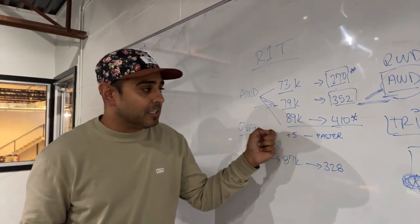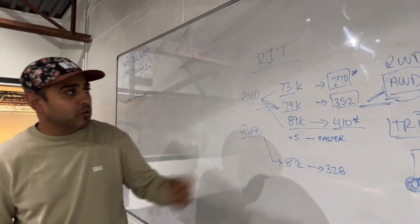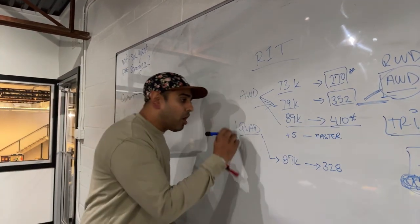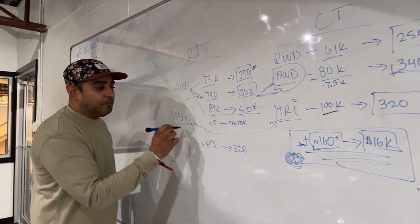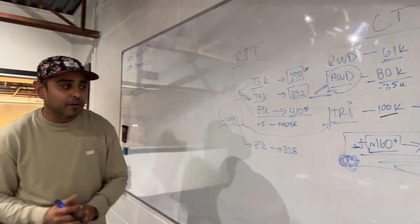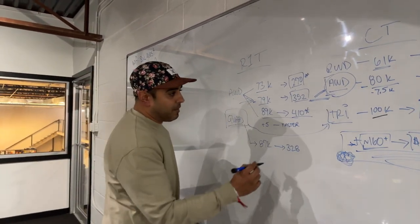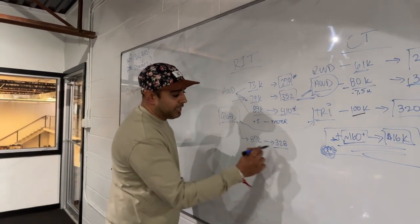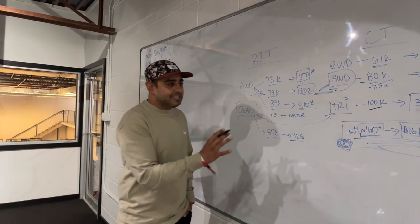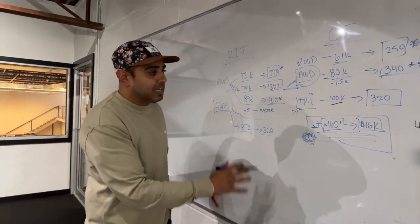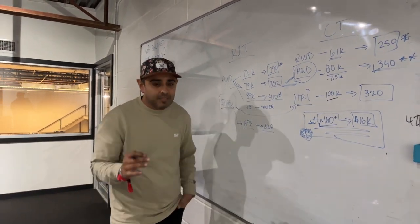Not only that, but R1T has a quad motor option. This is going to be on par with the tri-motor, but you've got quads, so a little bit better for off-roading and so forth. That one, you're going to get a little bit less range, but you're at $87,000. So a lot to take in here. I think Cybertruck definitely edges out because it is just a polarizing, amazing, cool vehicle that's bulletproof.